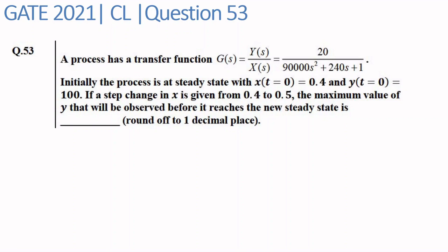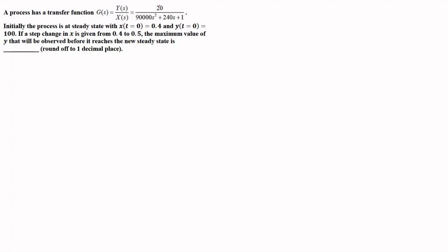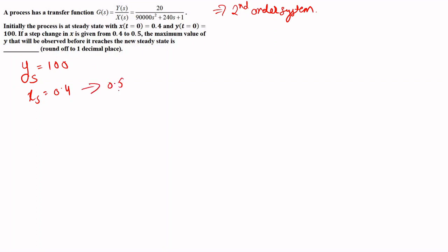We have been given a second-order transfer function. The process is at steady state with x(0) = 0.4 and y(0) = 100, so the steady state value of y is 100. We are introducing a step change from 0.4 to 0.5, and we need to find the maximum value of y.